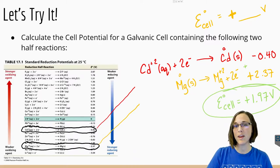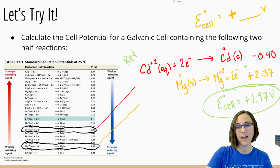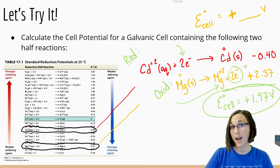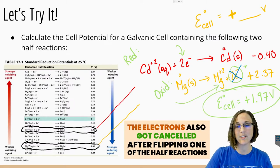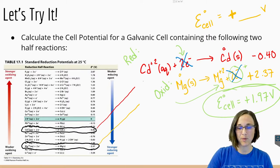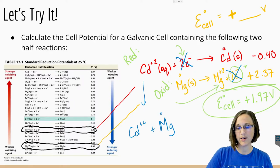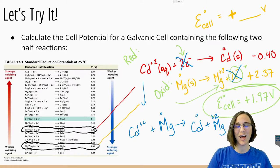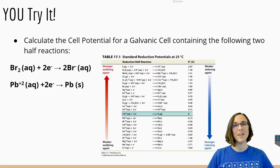Notice how automatically we then know that cadmium would have to be the reduction half and magnesium would have to be the oxidation half. This is because the electrons are on the reactant side for reduction halves, and the electrons are on the product side for oxidation halves. When we flipped this equation around, it also fulfilled the necessity of being able to cancel our electrons from reactant to product side. So our overall equation between cadmium and magnesium would be Cd²⁺ plus Mg solid goes to Cd solid plus Mg²⁺, giving us an overall cell potential of plus 1.97 volts.